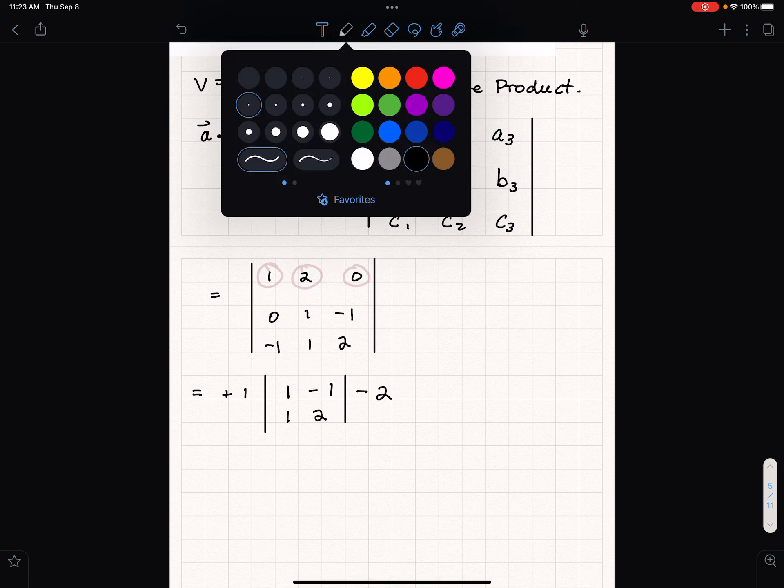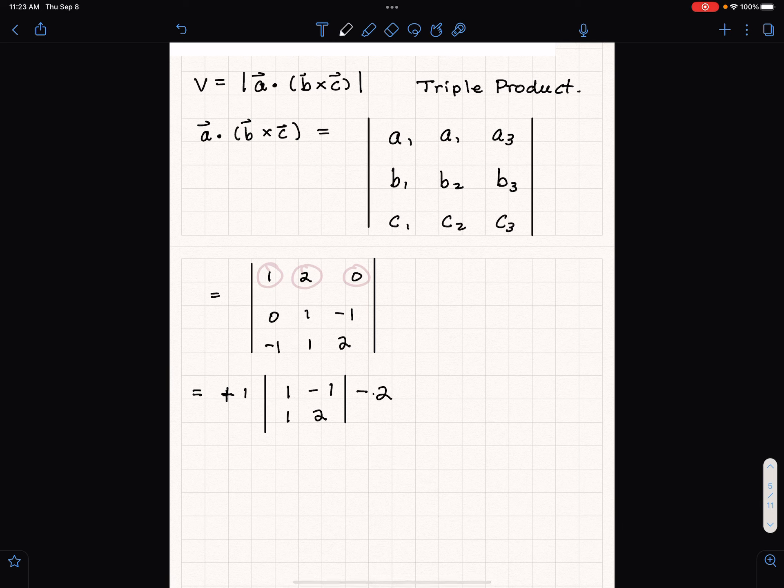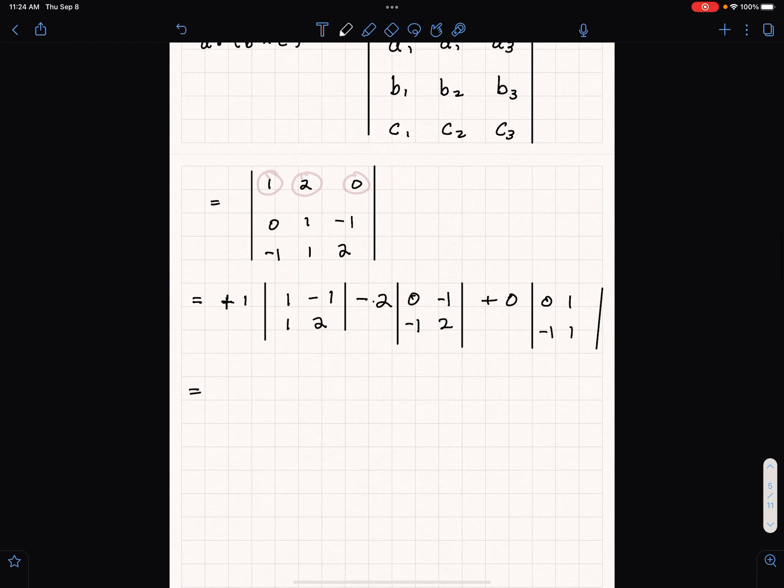Then I subtract the next number which is two, and you always do plus minus and then we'll have plus later on. We multiply the two by a two by two determinant which is found by canceling the row and column containing two. Then I add this number zero times the determinant, and it doesn't matter what this term is because it's multiplied by zero.